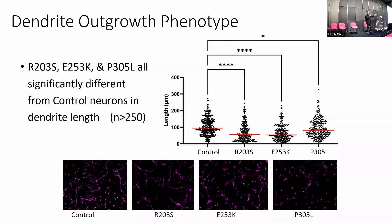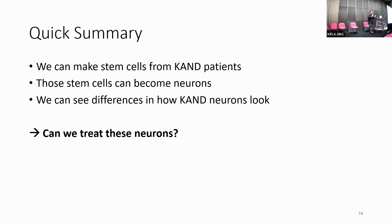When you compare the KAND lines to the control, what we're seeing in these specific ones — at the four-week time point — is there's really no difference earlier, so we have to wait until at least week four before we see the branches are shorter than the controls. We basically have a phenotype: something we can actually look at and say, 'Here's a difference, this is a marker for us.' If we change anything, we can use that to gauge if the treatment is actually working.